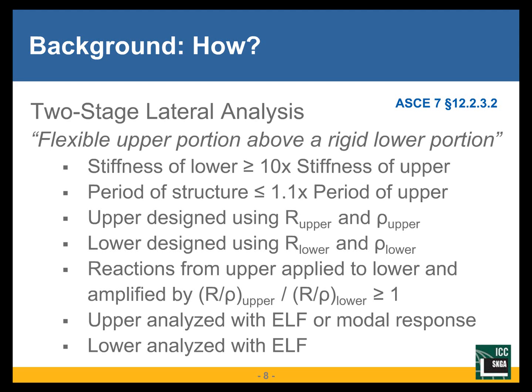Additionally, the period of the entire structure — the wood and concrete together — cannot be more than 1.1 times the period of just the upper portion alone. If those two conditions are met, we can design the upper wood portion and the lower concrete portion as two separate structures using their own R and rho values. The idea is that the wood portion is so flexible relative to the concrete that it's not reasonable to assume the mass of the concrete will be pulled up into the wood structure, which would otherwise force the wood structure to resist some of the concrete load. It's essentially like treating the concrete as a foundation.